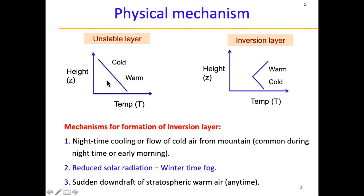Since cold air is denser it will sink, thereby creating unstable motion or instability, which is the typical state of the atmosphere — in a perpetual state of motion. But sometimes, if you look at the temperature profile, you have cold air on the bottom whereas you have warmer air on the top. That is what we call inversion, because now it is a very highly stable situation where no motion is possible, since warm air is less dense and cold air is denser, so you don't have any instability.